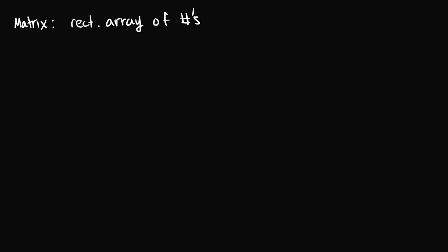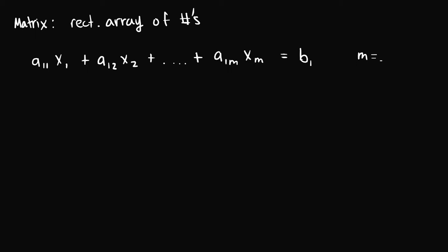Let's start by looking at the general system of linear equations. The general system would look something like this: we have some coefficient a₁₁ times unknown variable x₁, plus coefficient a₁₂ times unknown variable x₂, continuing all the way up to a₁ₘ times xₘ, equal to b₁. Here m is simply any real positive number.